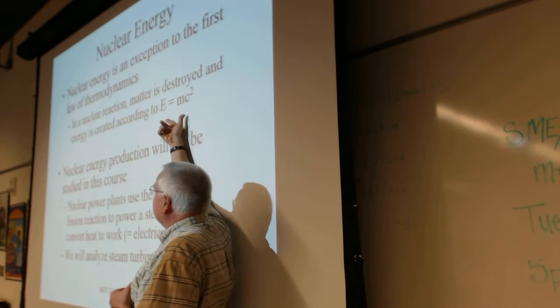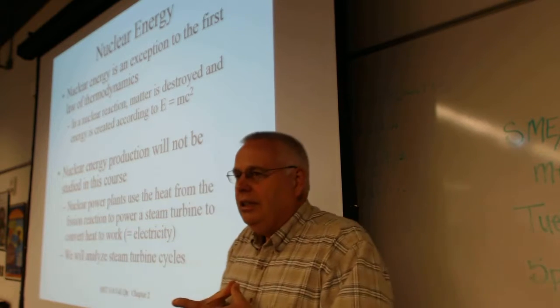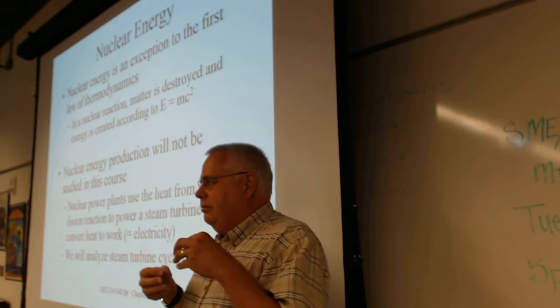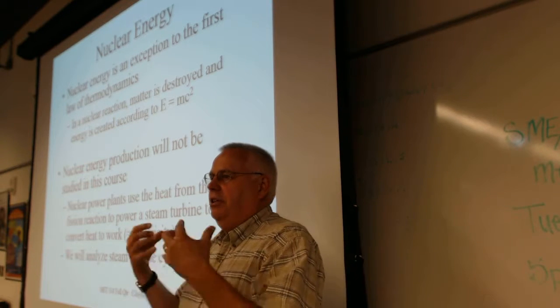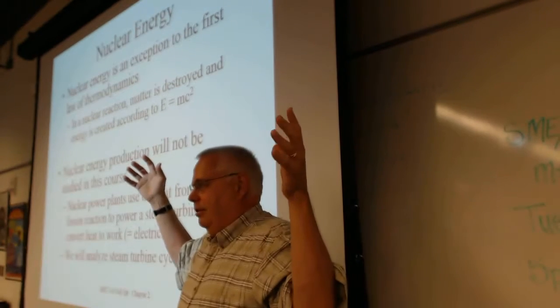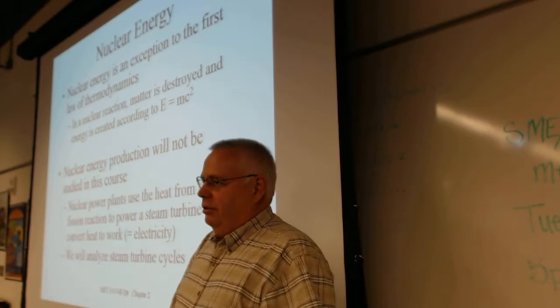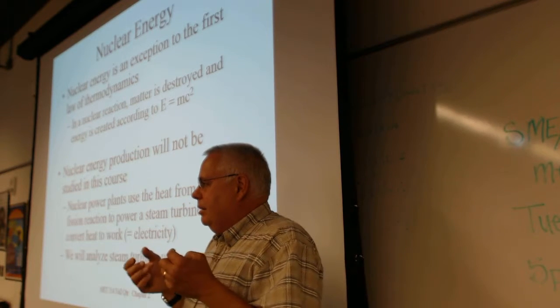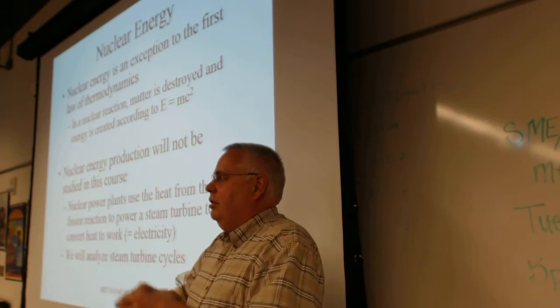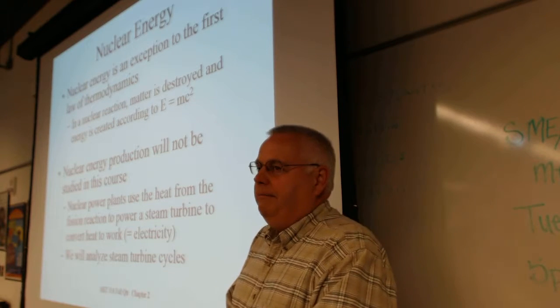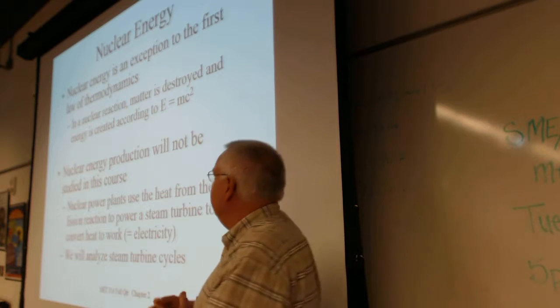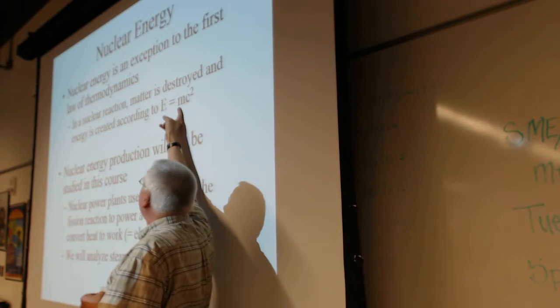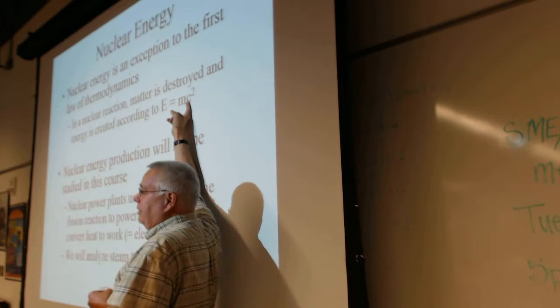This gets back to E equals mc squared. Einstein figured out the amount of energy - it's like one half mv squared, only it's mc squared. If you take uranium 238 and have fission, it basically breaks apart. When it breaks off, you end up with two parts that are less than 238 grams. There's some mass that's missing - that missing mass got converted into energy.